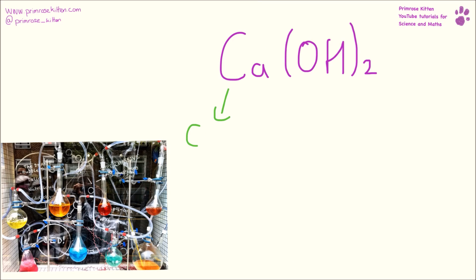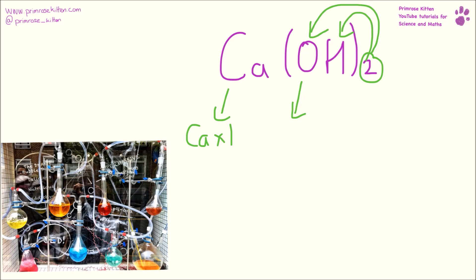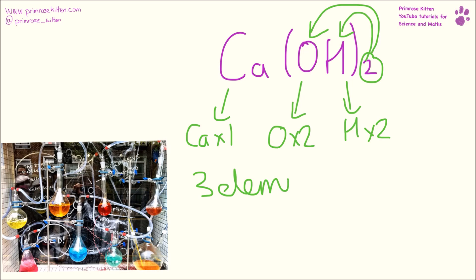Here we have calcium times one, and two times everything inside the brackets — so that's oxygen times two, hydrogen times two — giving us three elements and five atoms.